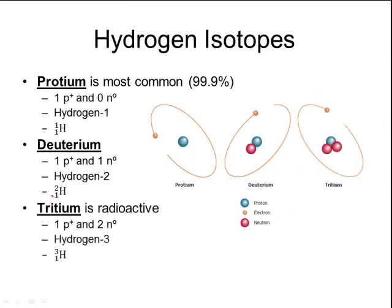The third isotope of hydrogen is called tritium. Tritium is radioactive, which means its nucleus is not stable and it falls apart and emits radiation. Tritium has one proton and two neutrons, and can be symbolized by writing hydrogen-3 or by the atomic symbol notated with 3 on top and 1 on the bottom left.